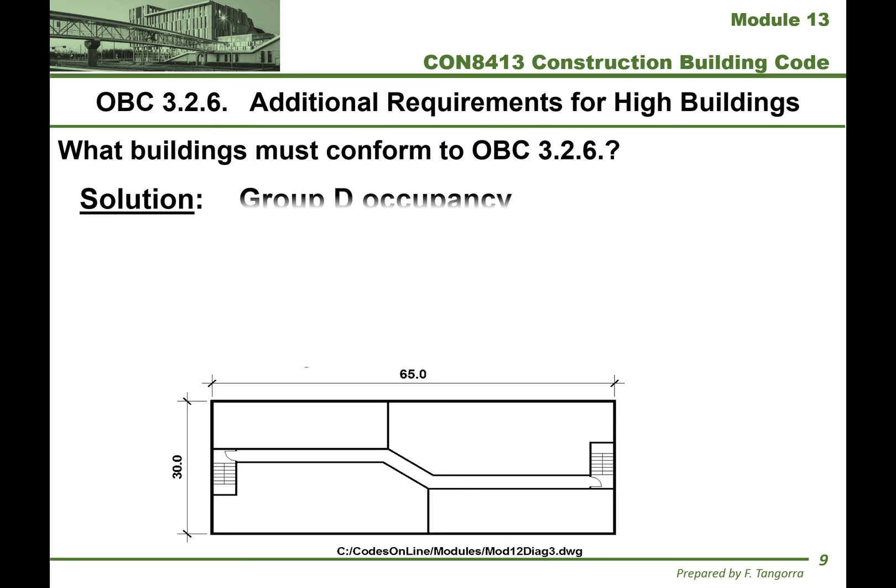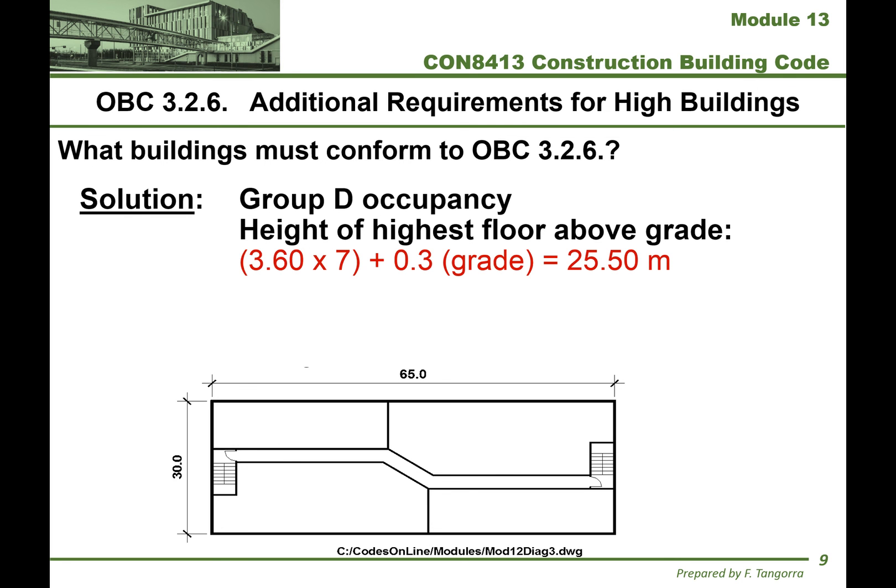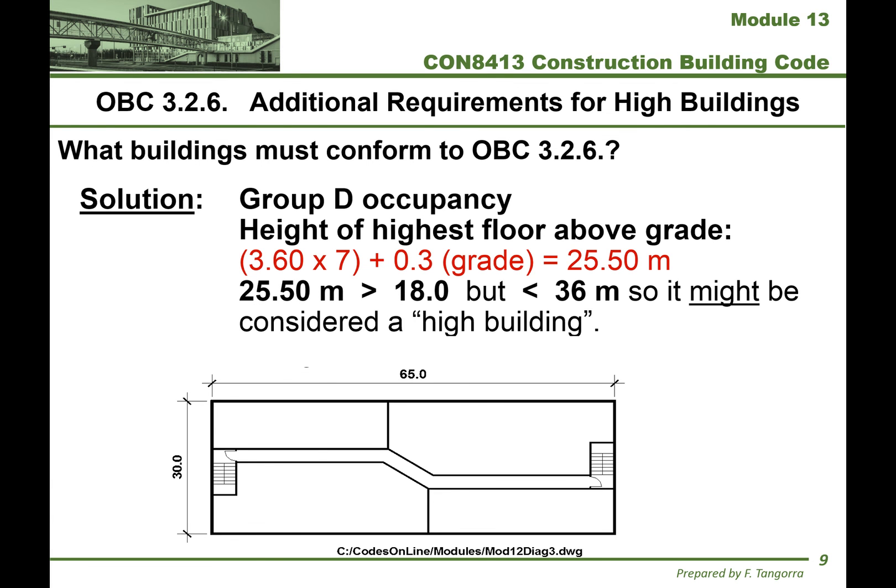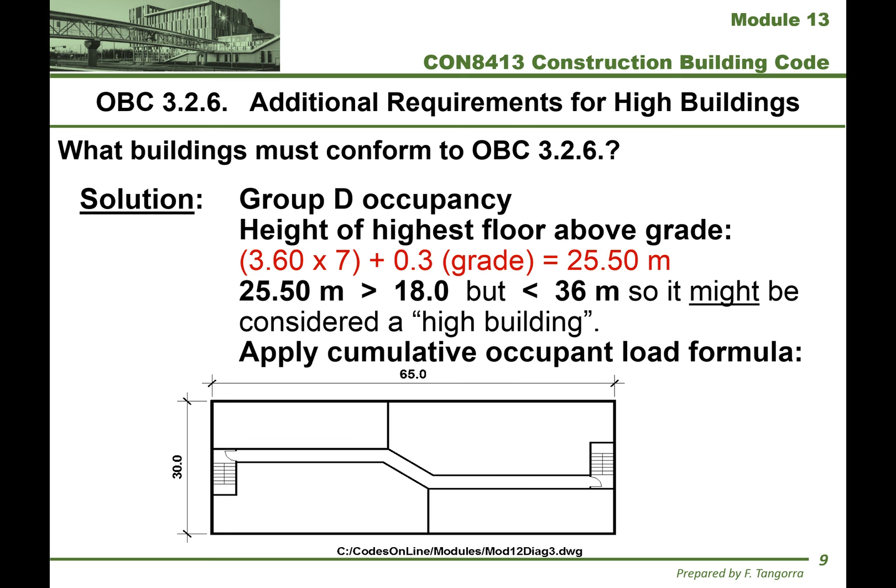Here's the solution. Based on its occupancy, this would be group D. If we calculate the vertical distance between grade and the top floor, it's 3.6 meters — the typical floor-to-floor height — times seven stories, not eight, because we're going to the top floor level, not ceiling level. Plus 0.3 meters of grade gives us a vertical distance of 25.50 meters. 25.5 is more than 18 but less than 36, so this building may be considered a high building, and we must use the formula to figure out whether or not it qualifies.